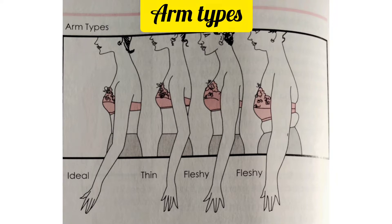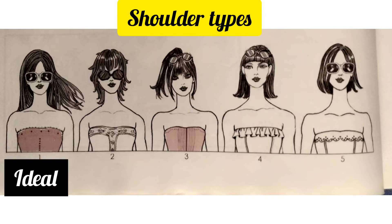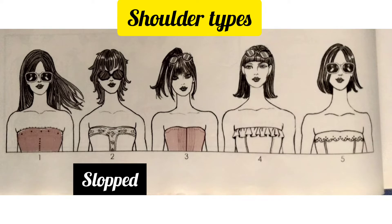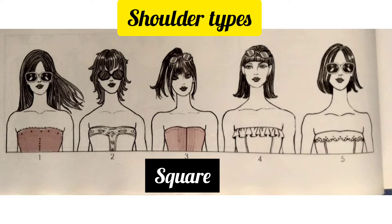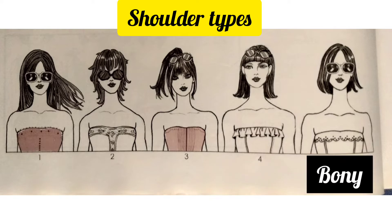The next figure variation is the shoulder type. The first model has ideal shoulders. The second model has sloped shoulders. The third model has square shoulders. The fourth model has muscular shoulders. The fifth model has bony shoulders with a dominant clavicle.